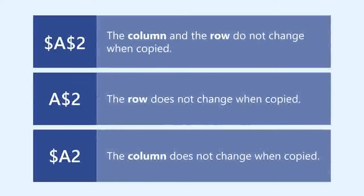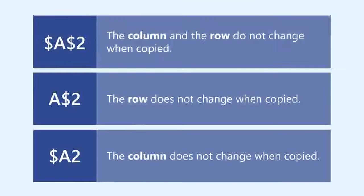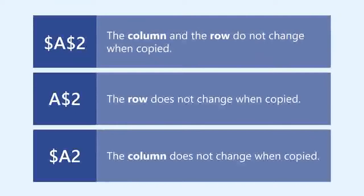Absolute references have a dollar sign placed before the column, row, or both to keep them from changing when you copy the formula to another cell. To keep the column and the row from changing, place a dollar sign in front of both. To keep only the row from changing, place a dollar sign in front of the row only. To keep only the column from changing, place a dollar sign in front of the column. Most of the time, you'll be using the first type — where there's a dollar sign before both the column and the row.